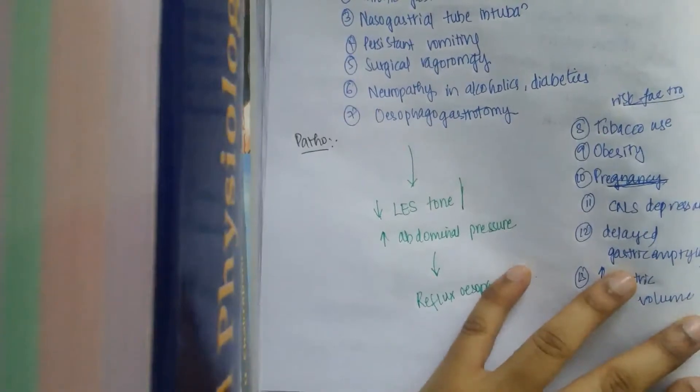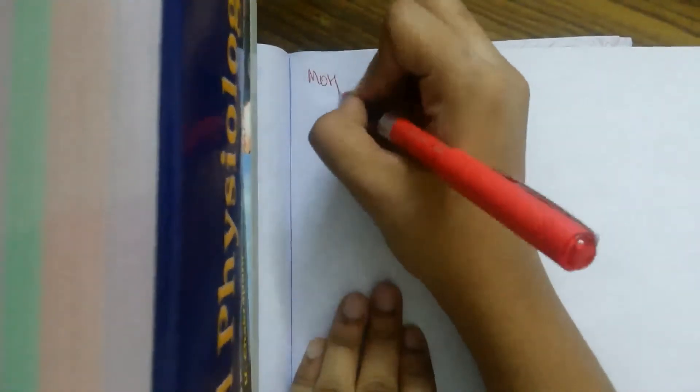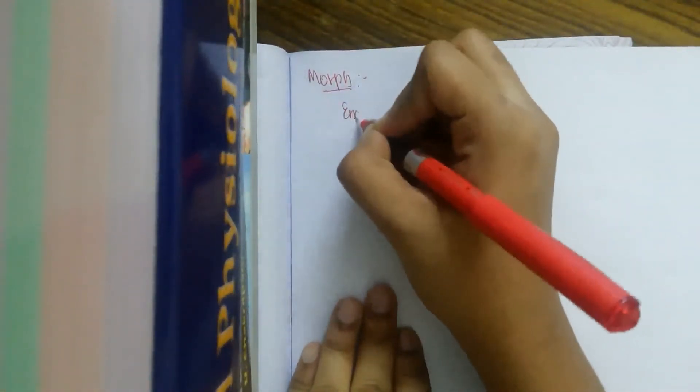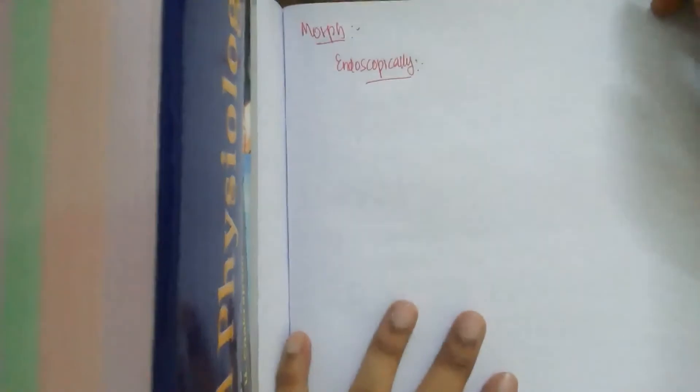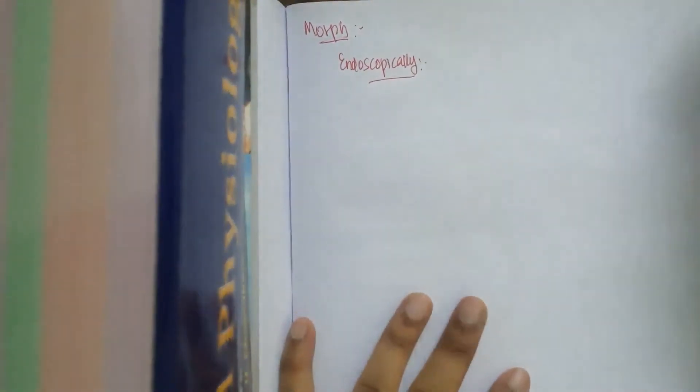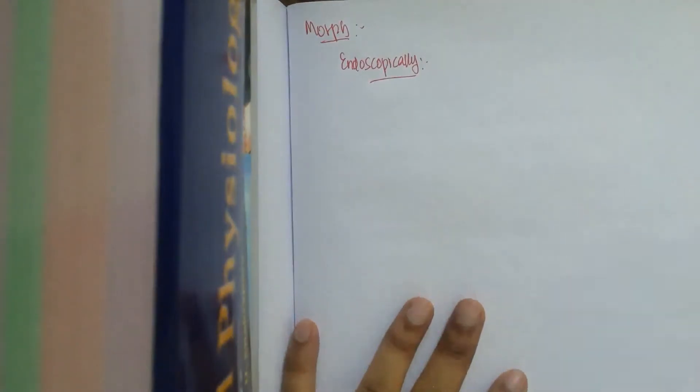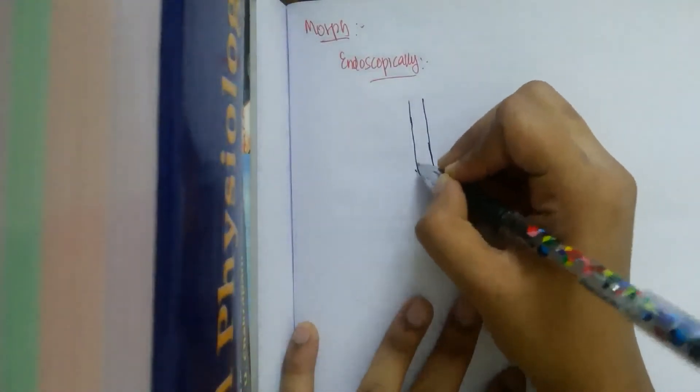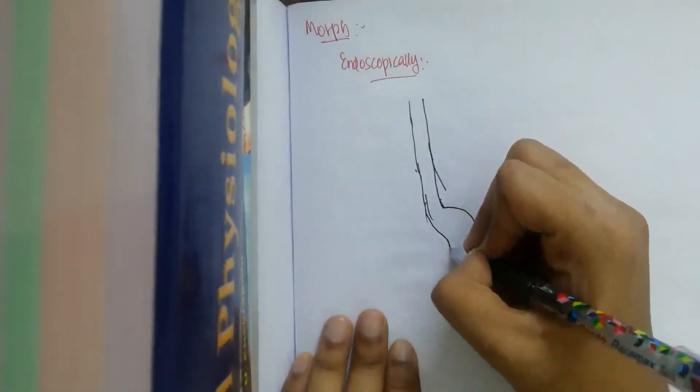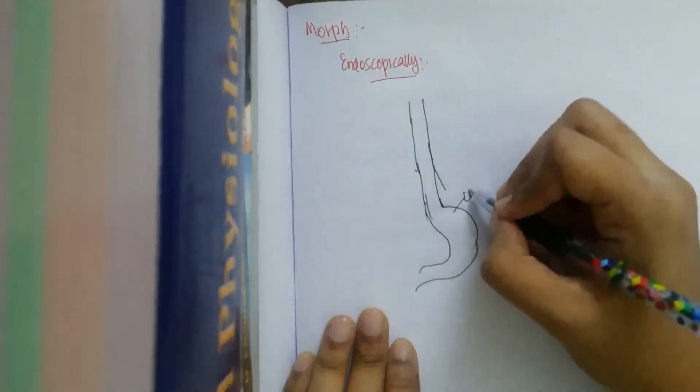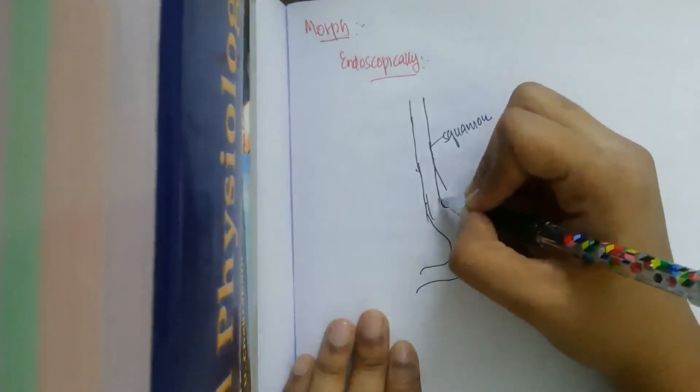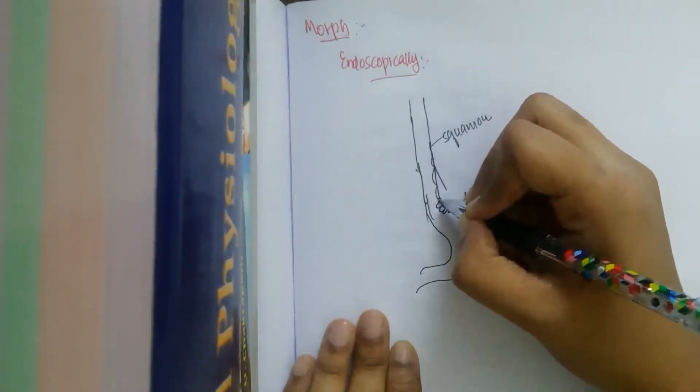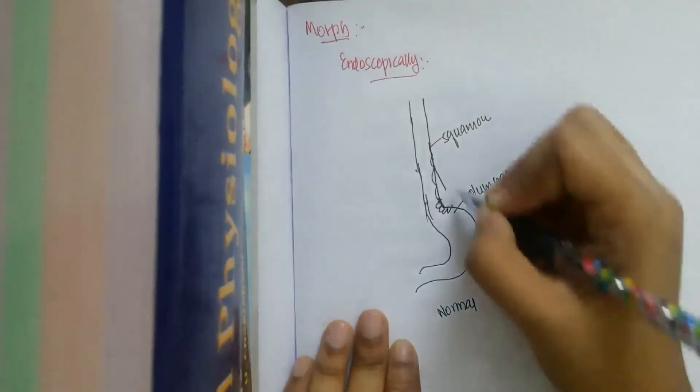Coming to the morphological features of reflux esophagitis. Endoscopically, what can you see? Esophagus is mainly made up of squamous epithelium, and the stomach is columnar epithelium. Here you can see the demarcation, here squamous and here columnar. This demarcation is normally found in normal.